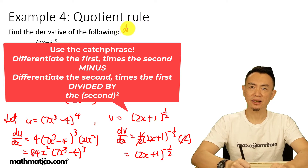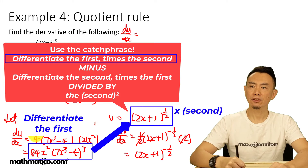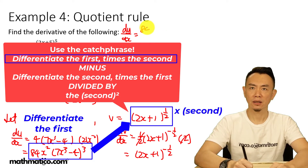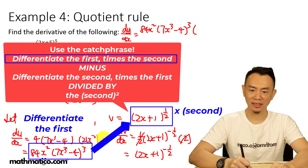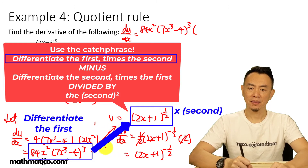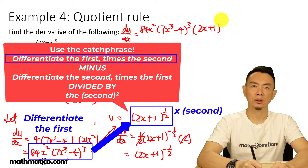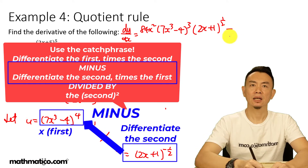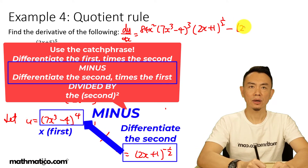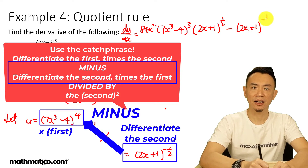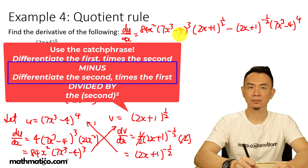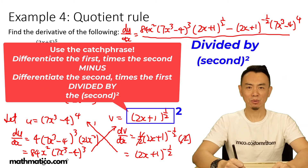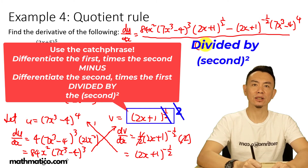So now dy/dx equals differentiate the first times the second: 84x squared times (7x cubed minus 4) to the power of 3, times (2x plus 1) to the power of a half, minus differentiate the second times the first: (2x plus 1) to the power of negative half, times (7x cubed minus 4) to the power of 4, all divided by (2x plus 1) to the power of 1 — because the square root in the denominator squares, giving just (2x plus 1).